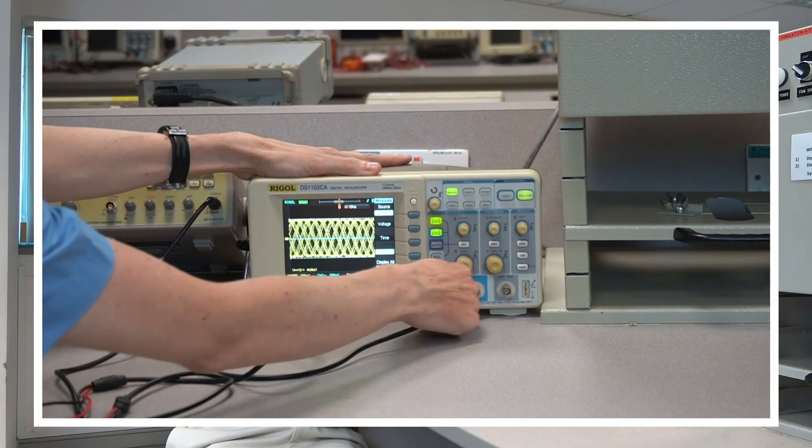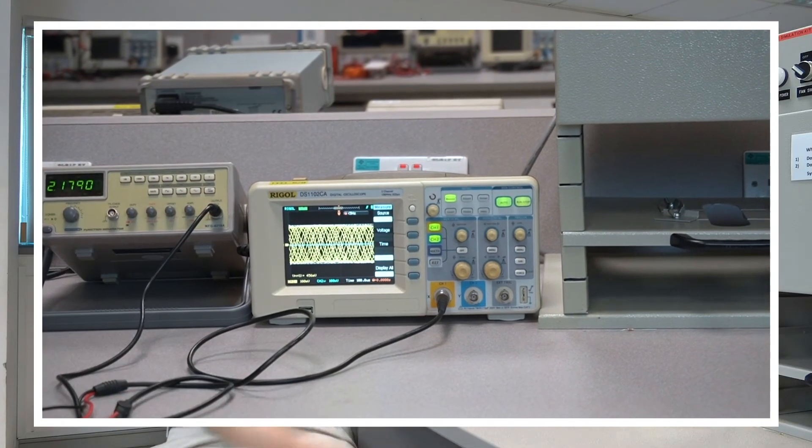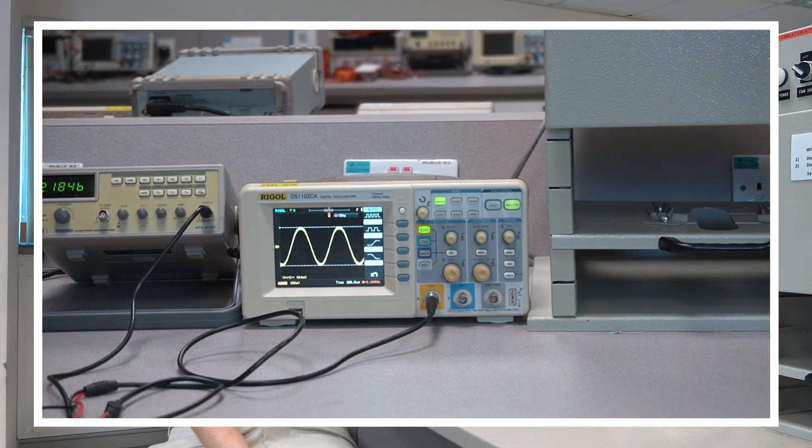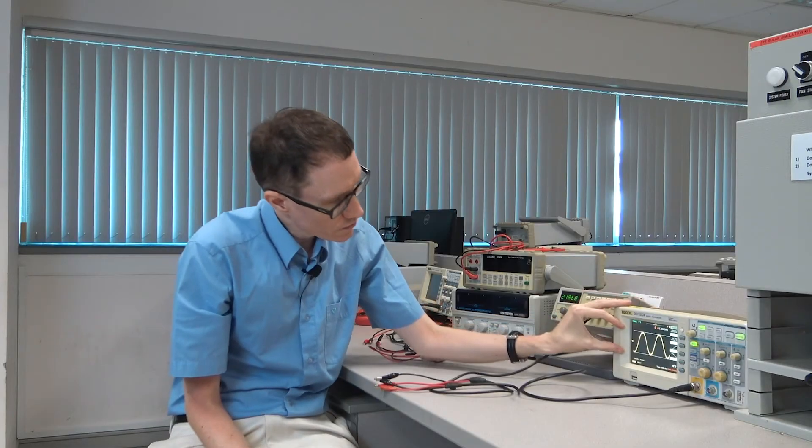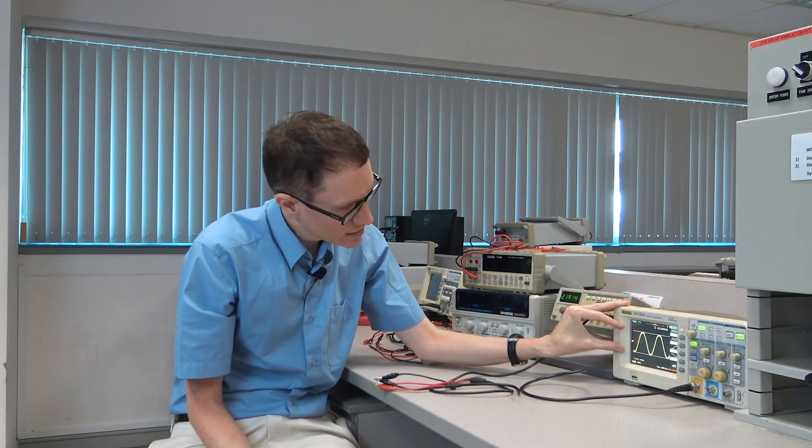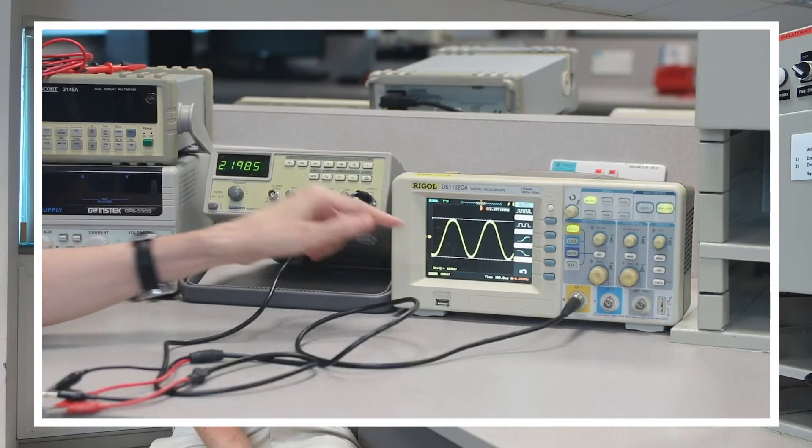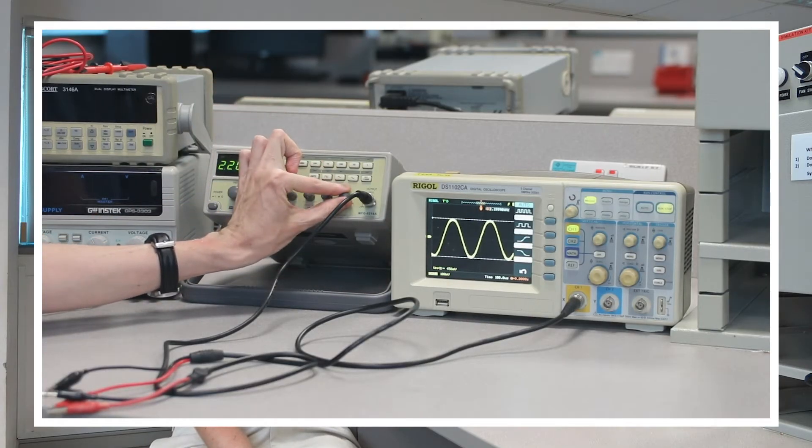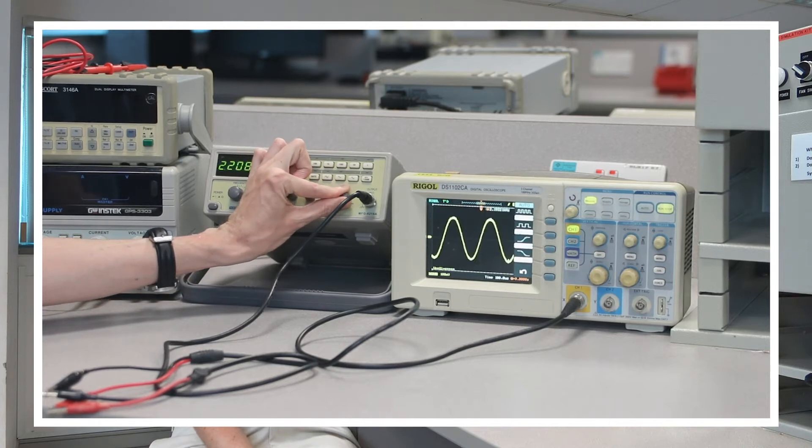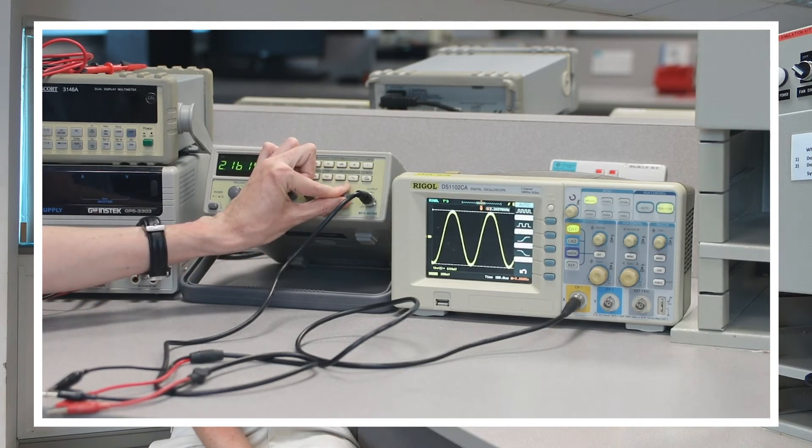Let me move this over to channel one so that we only have one showing and I'll hit auto set to bring it back. There we go. So the oscilloscope is now telling me that my peak to peak voltage on channel one is 460 millivolts. If I then adjust the amplitude on the function generator, then that number is going to change.